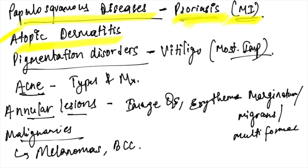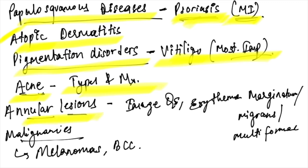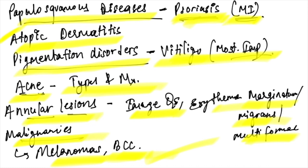Pigmentation disorders — especially vitiligo — are very important: know the diagnostic tests and management. For acne, revise the types and management, and study the images. Revise annular lesions for image-based questions — erythema marginatum, erythema multiforme. Finally, for malignancies, revise melanoma and basal cell carcinoma with their clinical images. These are the last-minute revision points for short subjects; all subjects will be covered, so stay tuned.